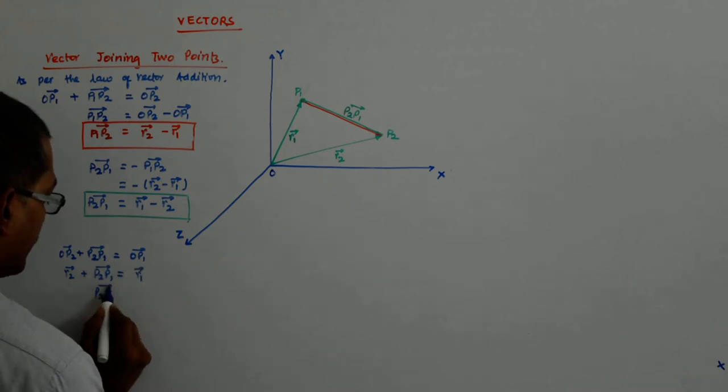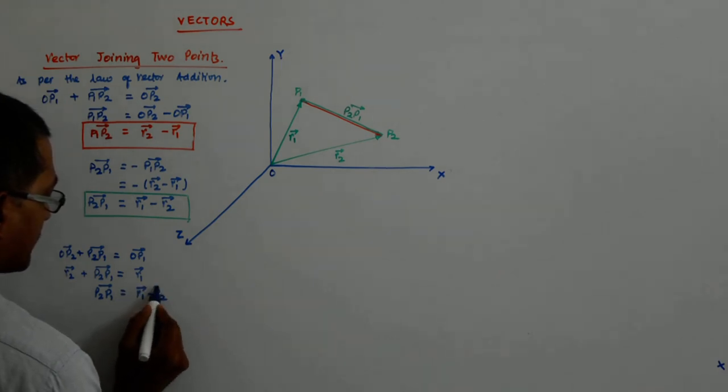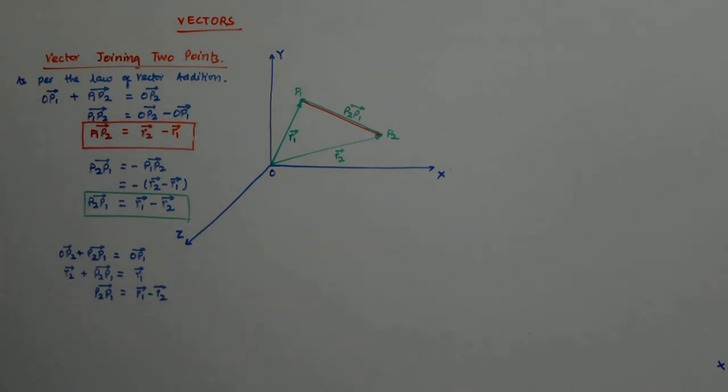So P2P1 is equal to R1 minus R2. So I get in the same way, right.